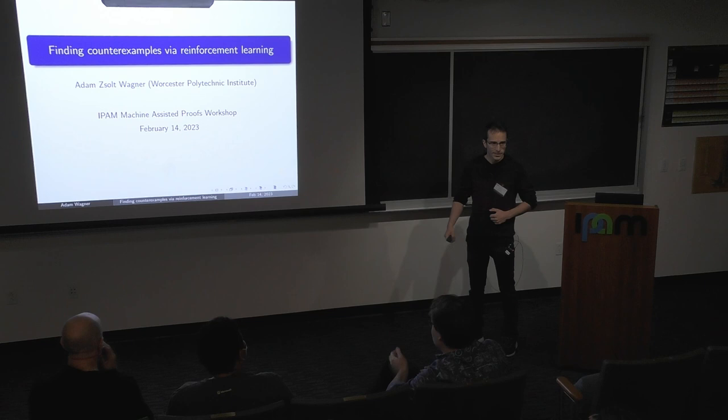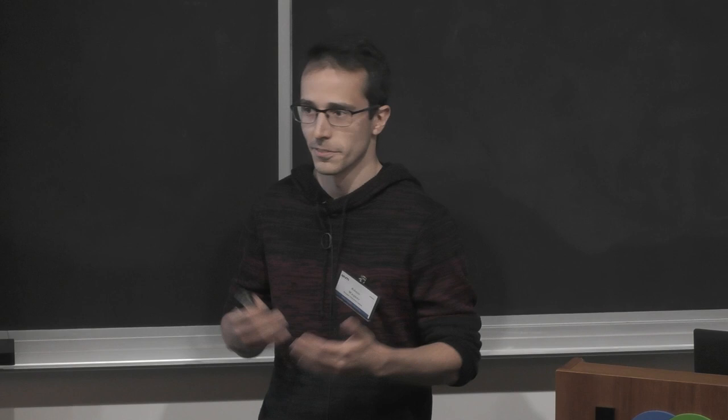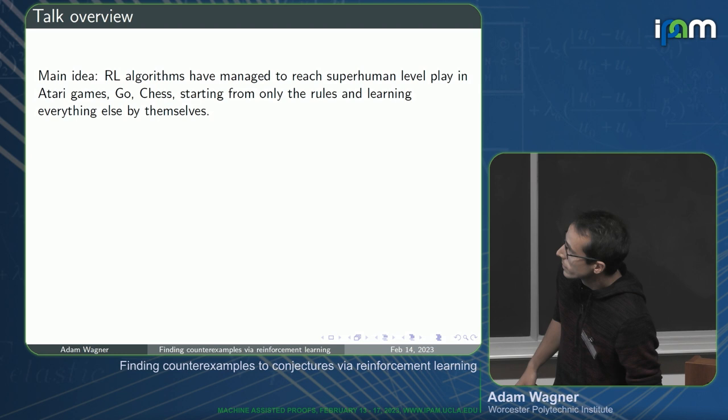I will tell you a little bit about how to find counterexamples to various mathematical conjectures by using some machine learning or reinforcement learning methods. The main idea is that companies such as DeepMind have created programs that can play chess, Go, and Atari games at superhuman levels.